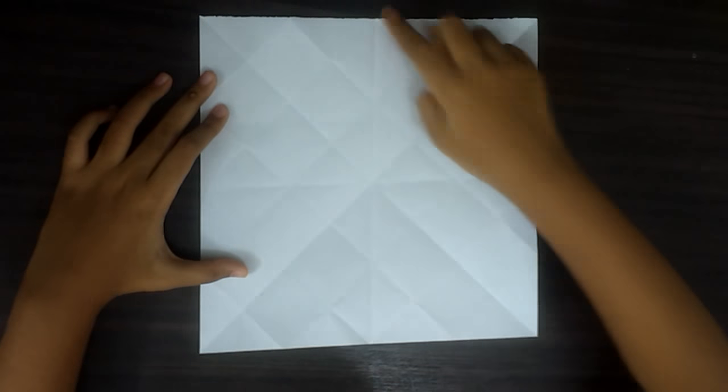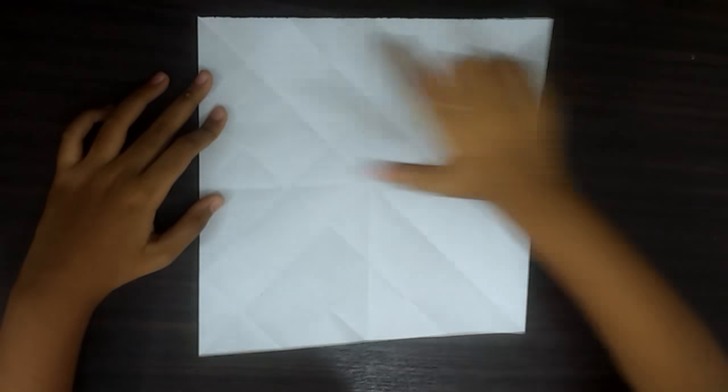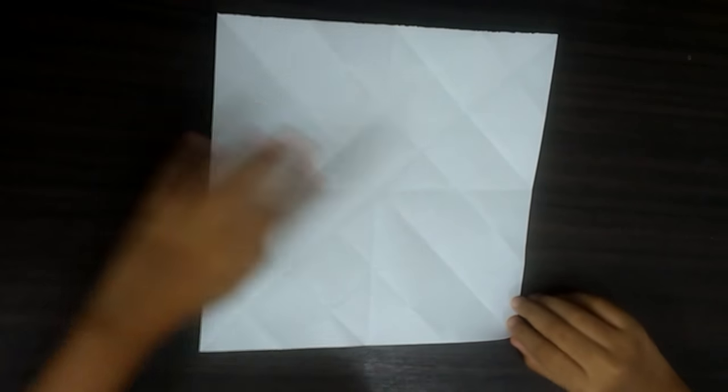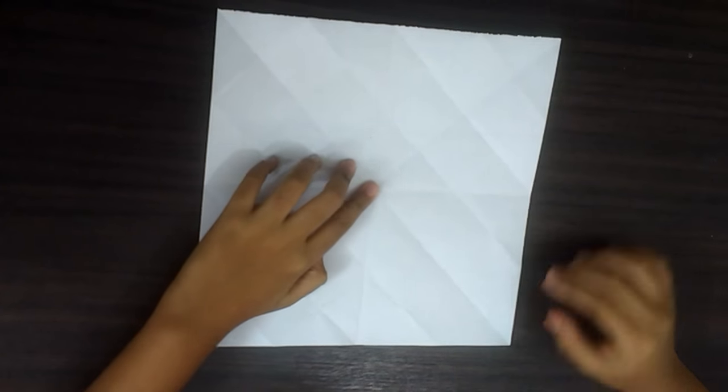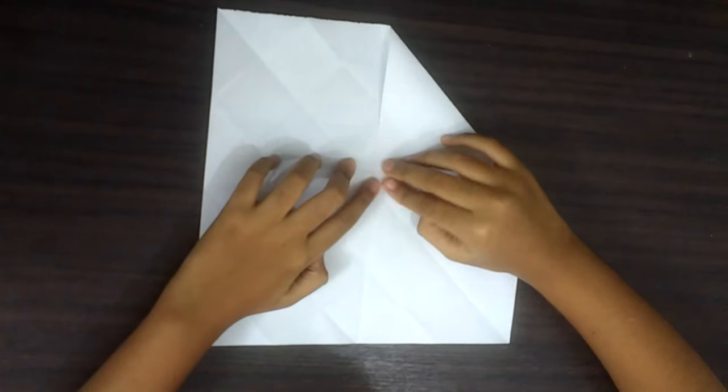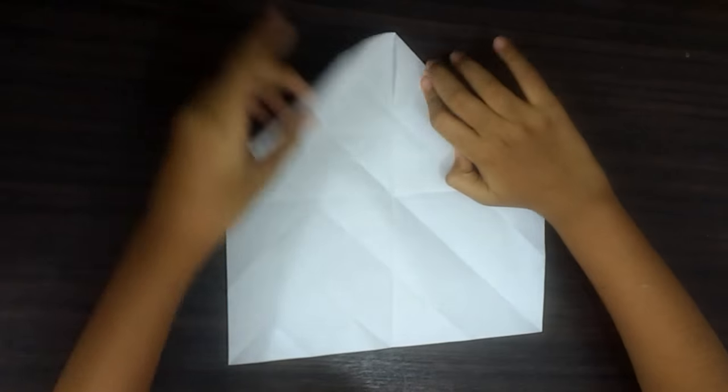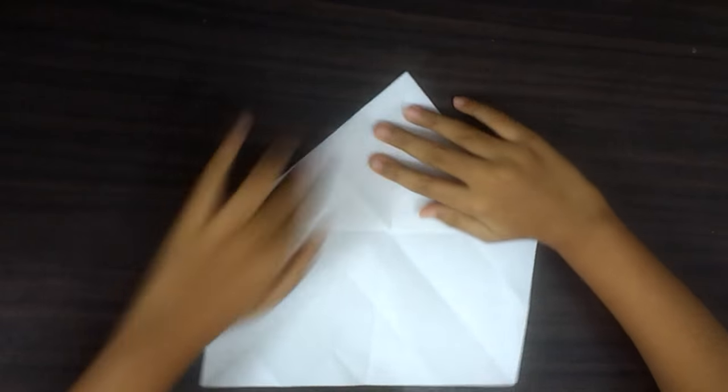Now, we will get a horizontal and vertical line with two diagonal lines. We will get a middle point over here. Fold one corner to the middle point. Do the same with the other sides.